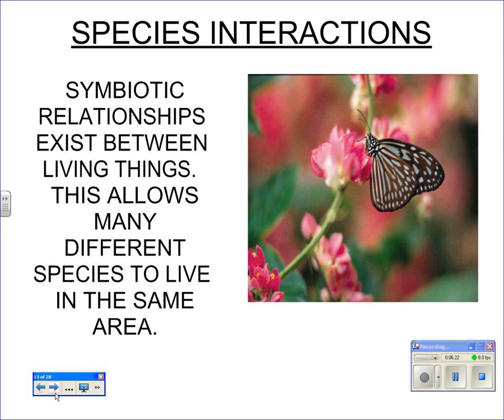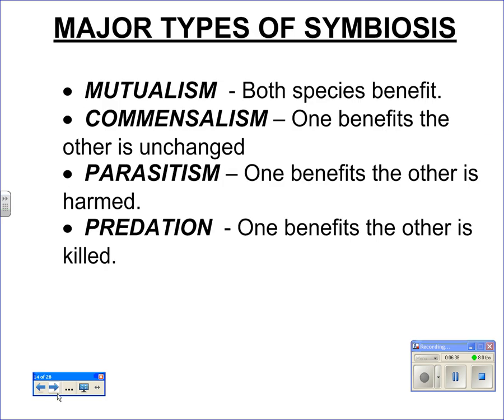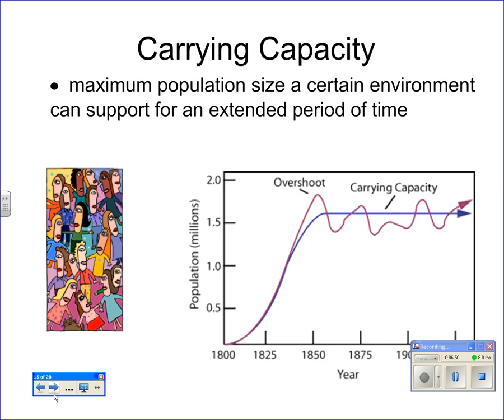Species interact in many different ways. Over millions of years, evolution has created interesting relationships referred to as symbiosis. Types include mutualism, where both species benefit; commensalism, where one benefits and the other is unchanged; parasitism, where one benefits and the other is harmed; and predation, where one benefits and the other is killed. The carrying capacity of a population is reached when limiting factors in the environment are reached — the population rises, often overshoots, then crashes and stabilizes. This applies to humans, plants, and animals.